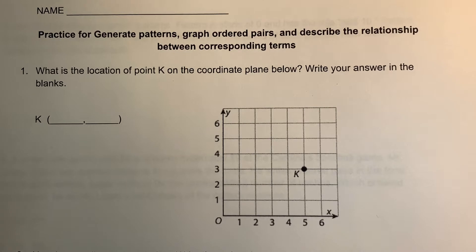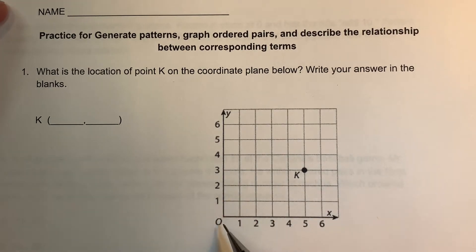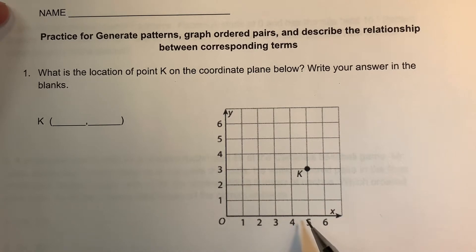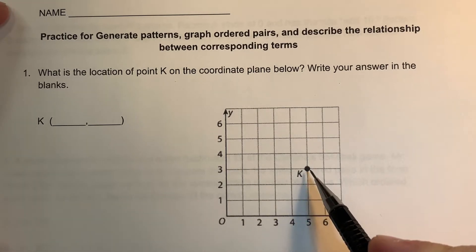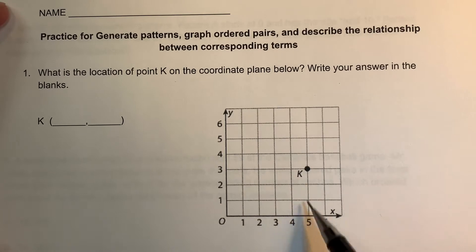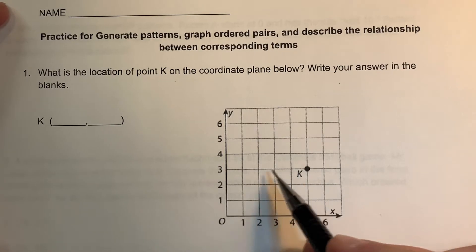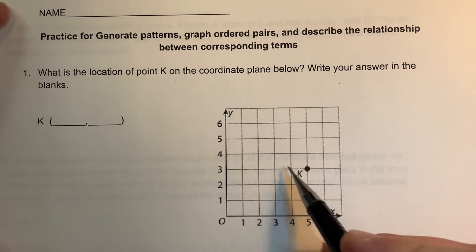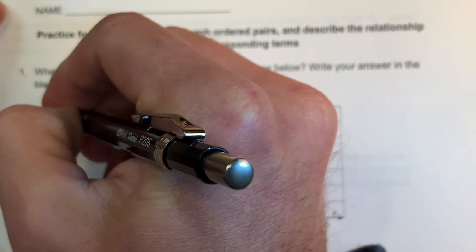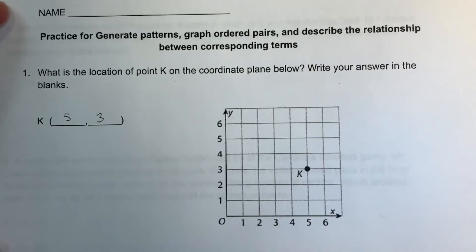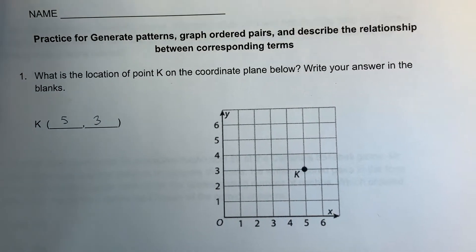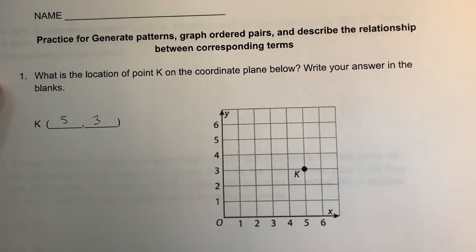First we're going to look at the location of point K on the coordinate plane below. We always start at the origin — go over five, up three. So our coordinates are going to be (5, 3). Remember: run before you jump. There are a couple of different sayings.